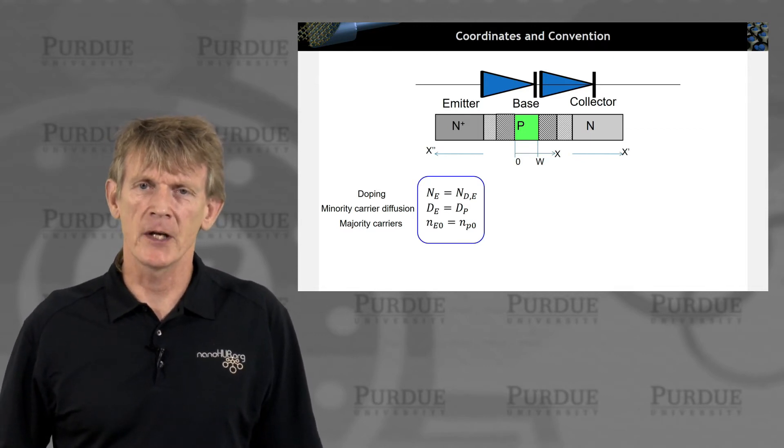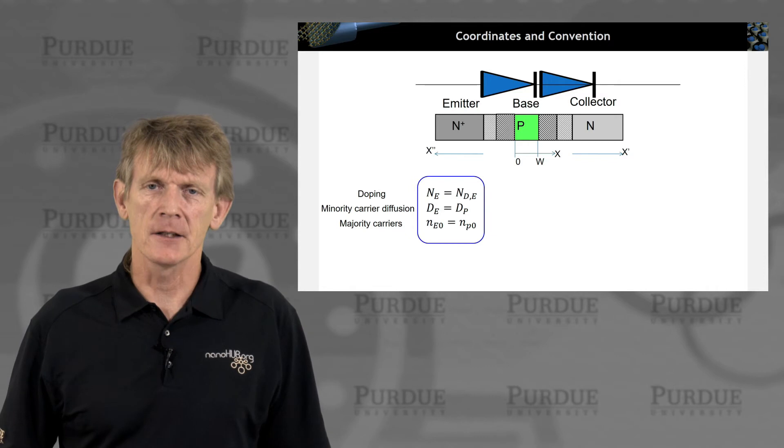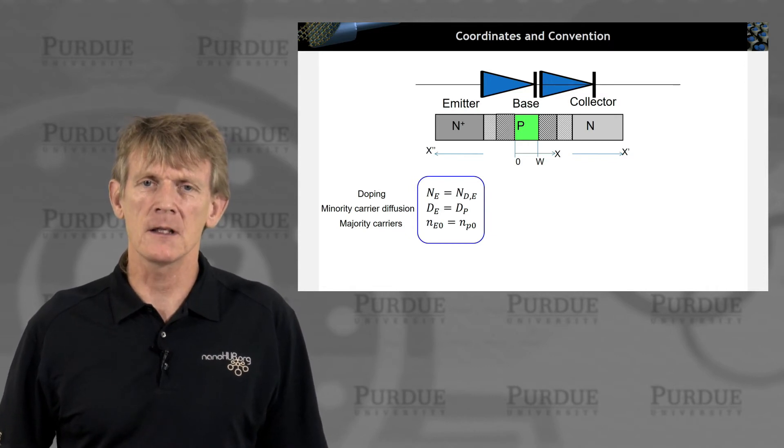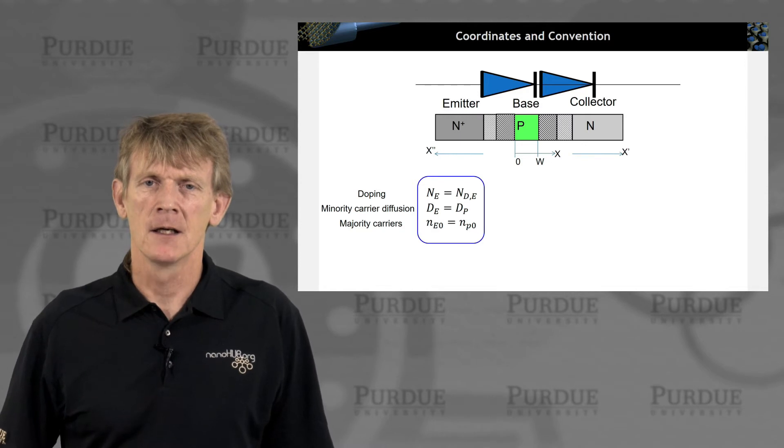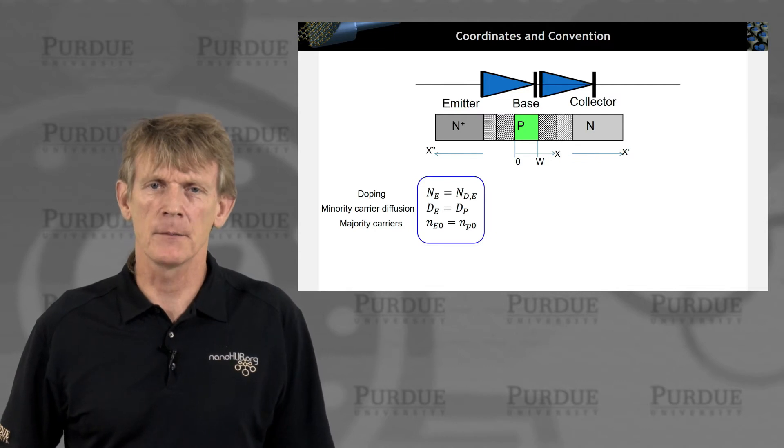The issue really at hand is we have three layers that we need to deal with, each of which have doping, each of which have a diffusion coefficient, and a majority carrier. We'll consider an NPN transistor, as I mentioned.